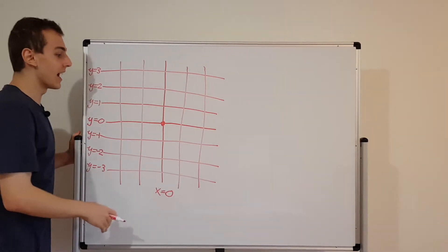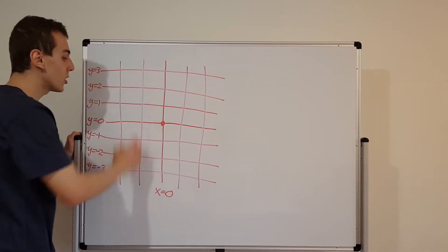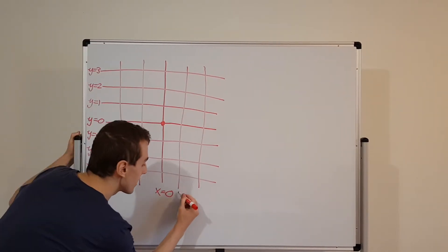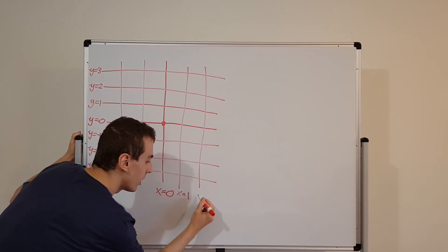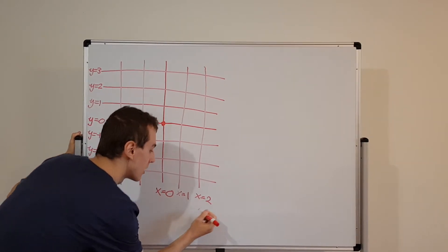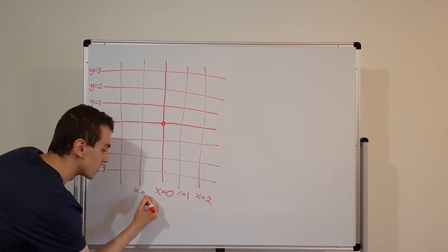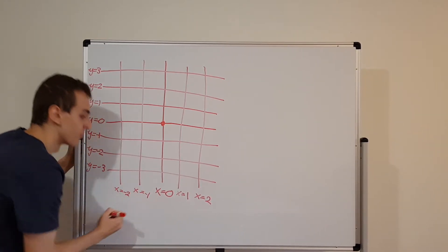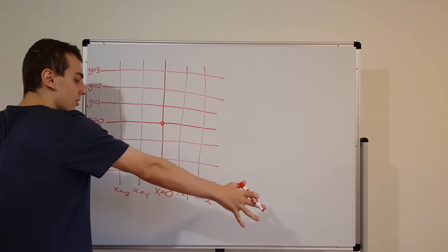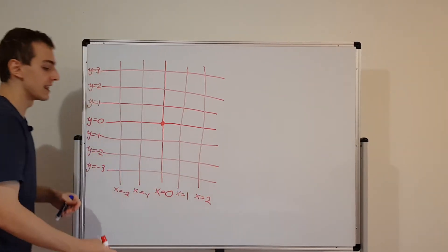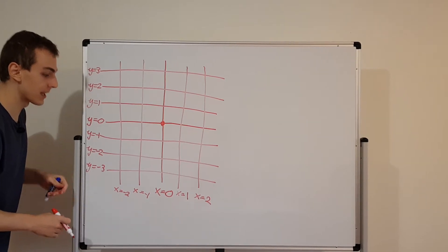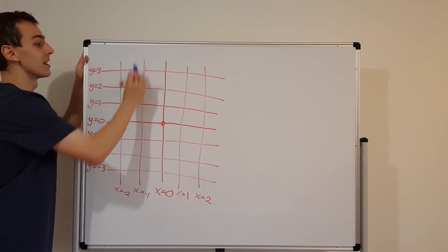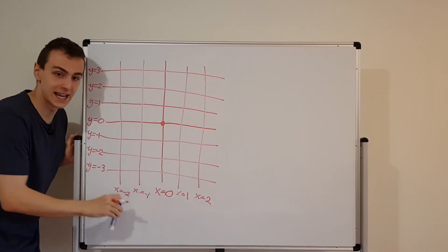Now let's look at the vertical lines — these are where the x coordinate is fixed. Going right: x equals 1, x equals 2. Going left: x equals minus 1, x equals minus 2. These lines keep going forever in the positive direction to the right and the negative direction to the left. The same applies to the y coordinates — they keep going forever upward in the positive direction and downward in the negative direction.